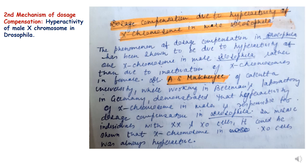The second mechanism of dosage compensation occurs in Drosophila due to hyperactivity of the male X chromosome. This was shown by Dr. A.S. Mukherjee of Calcutta. In this phenomenon, there is hyperactivity of the X chromosome in males rather than inactivation of an X chromosome in females. Dr. Mukherjee observed that in mosaics of individuals with XX and XO cells, the X chromosome in XO cells was always hyperactive.